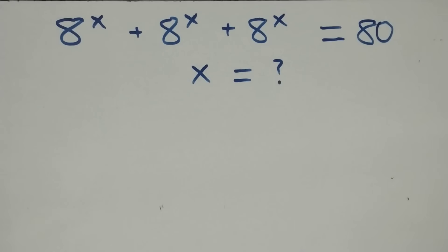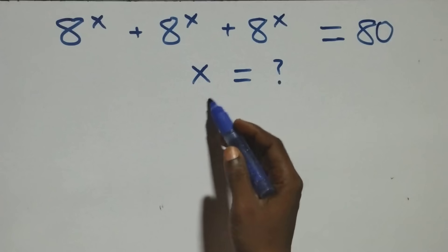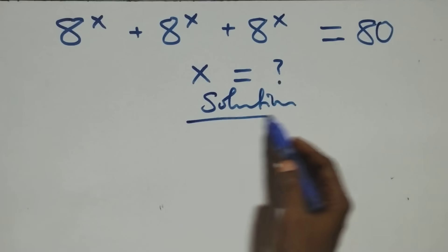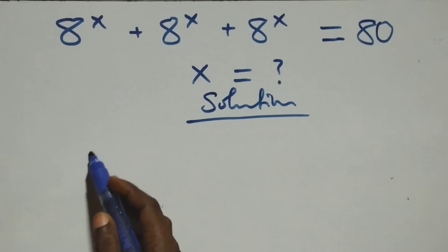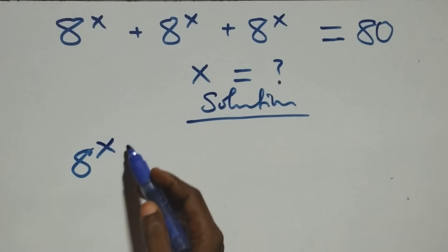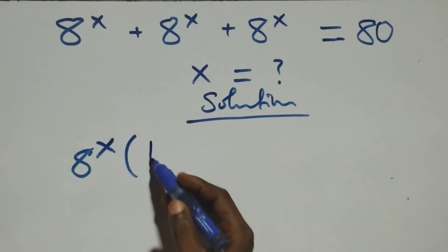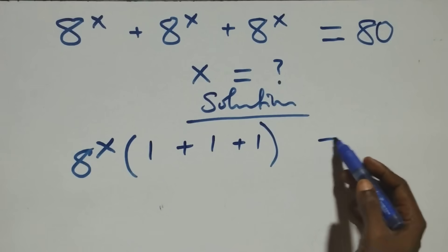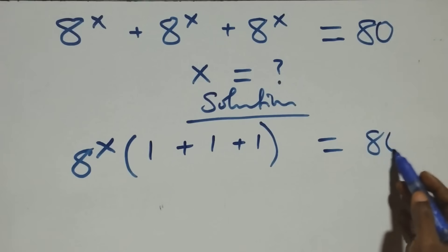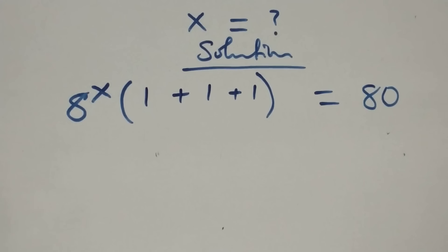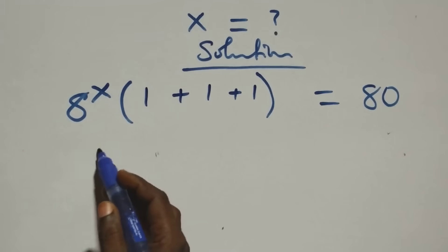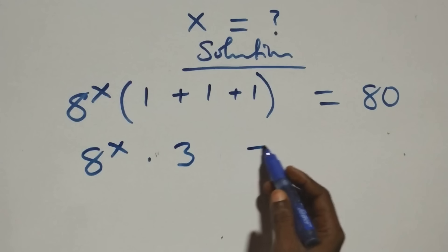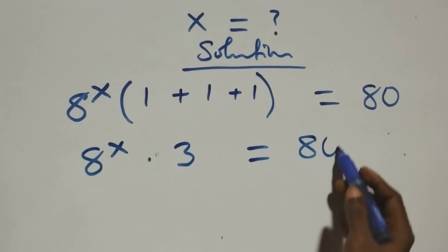Hello, you're welcome. Here's how to solve this nice exponential equation. From what we have here, we factor a raised to power x out — that is, we have a raised to power x in brackets. Here we have one plus one plus one, which equals 80 on this side. That is, the next step gives us a raised to power x times three equals 80.